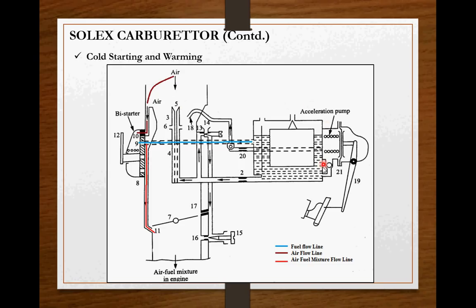This is my float chamber which obtains fuel from fuel tank using this tube, this channel. Once float chamber has fuel, it supplies fuel to this channel to this bystarter during cold start. Now in order to understand better, I have used color coding. Blue line indicates flow of fuel, brown indicates air flow line and red indicates air fuel mixture flow line.